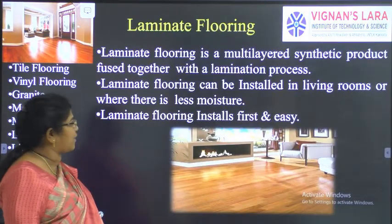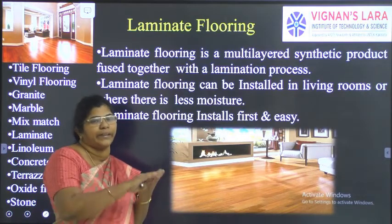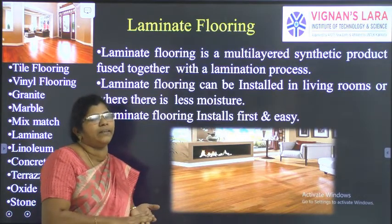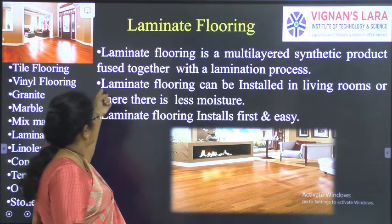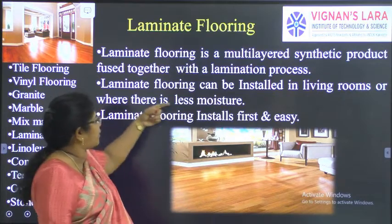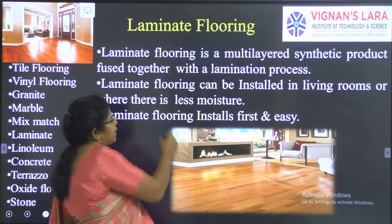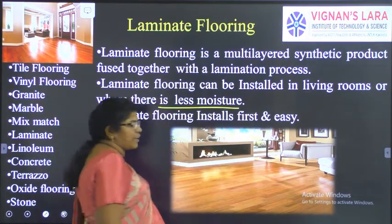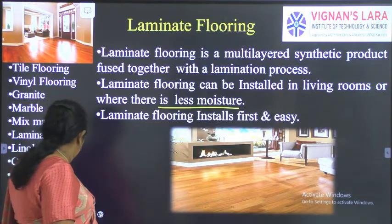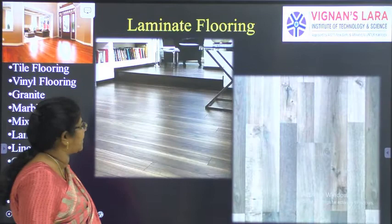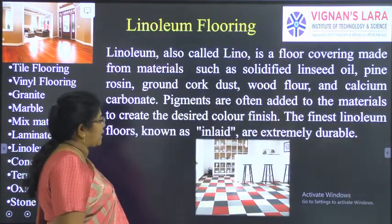The next type is laminated flooring. Laminated flooring is a multipurpose synthetic product that is laminated layer by layer and given a smooth, glassy finish — fused together with a lamination process, similar to how a certificate is laminated. It can be installed in living rooms where there is less moisture, as it will absorb moisture and warp. There are many types and colors available and laying it is very easy.